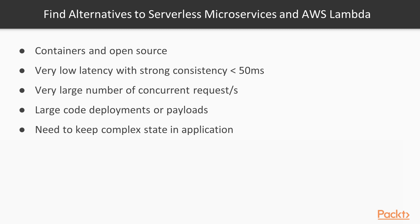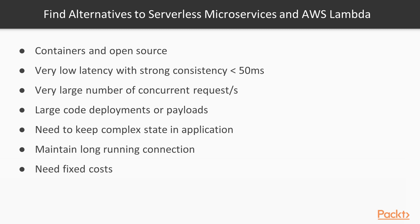You might have a use case such as a security use case or an online ML model where you need to maintain state. If you need to maintain a connection open for longer than a few minutes, then Lambda is probably not ideal. The use case I've seen is when you want to run a complex query on Amazon Redshift that takes several hours to run and you want to keep the connection open until it completes — in those cases, you should consider other solutions. If you need fixed costs, then alternatives might be better, as serverless is pay-as-you-go and costs are dependent on usage. We'll explore that in the next section.